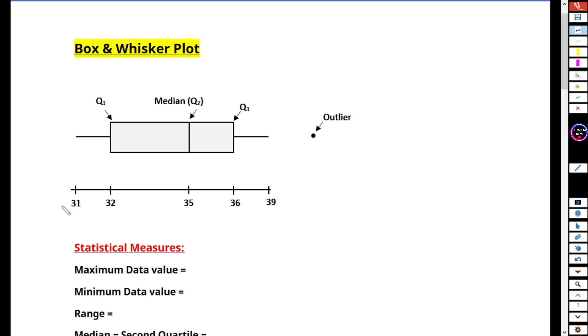Basically, box and whisker plot is a graphical representation for the distribution of data, and sometimes it also represents data with outliers. You can see the outliers. Basically, we know outliers are the extreme data sets.